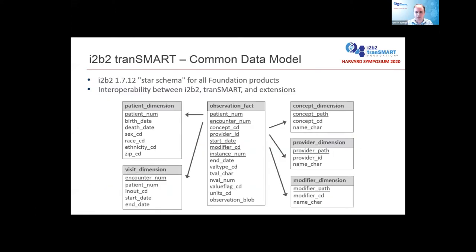The first step is adopting a common data model. We've been working on this for about a year, but it's been greatly accelerated through our grant from Dell Technologies. We're moving forward using the i2b2 1.7.12 star schema — the core set of tables. An important part of this is documenting the uses for the different fields, because even when using the same tables, i2b2 and tranSMART have repurposed fields in different ways over time.